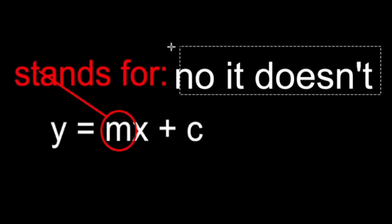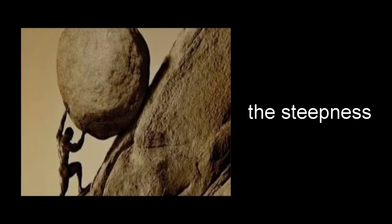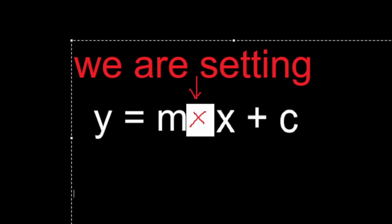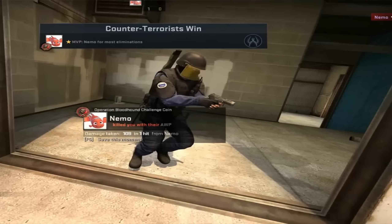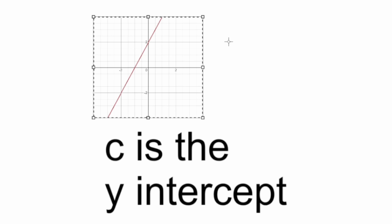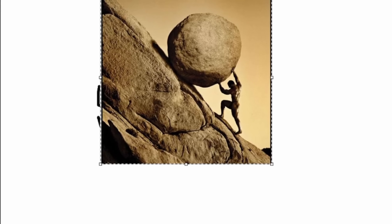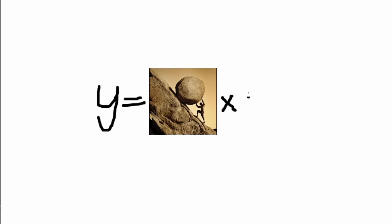M stands for the slope — the steepness of the graph. So when we are multiplying x by m, it is setting the steepness of the graph. And finally for the c — c is the y-intercept, the y-coordinate where the y-axis and the line meet. So to quickly recap: for each possible x-coordinate, the respective y-coordinate is equal to the steepness multiplied by said x, then shifted up or down by the y-intercept.